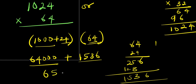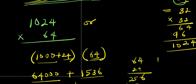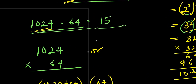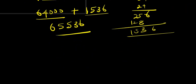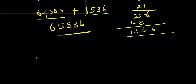So we have 65,536. The next thing would be to multiply that by 15 to have our final answer. So we have 65,536 times 15.